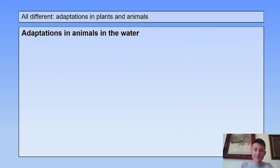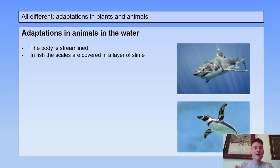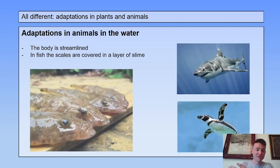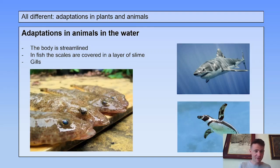If you look at animals living in the water, you often see that the body is streamlined. In fish, the scales are covered in a layer of slime and they breathe in oxygen using their gills.